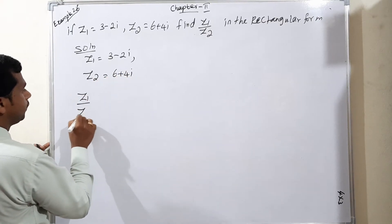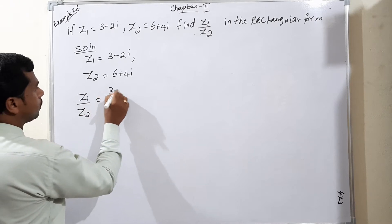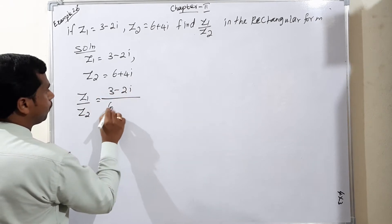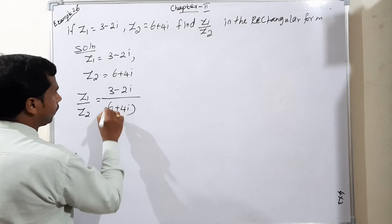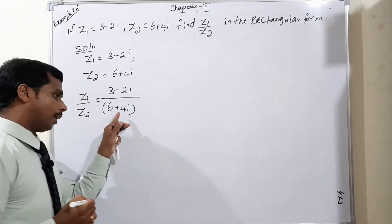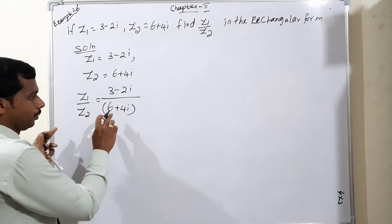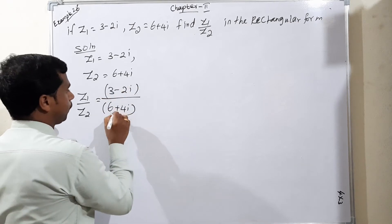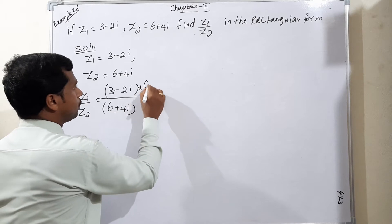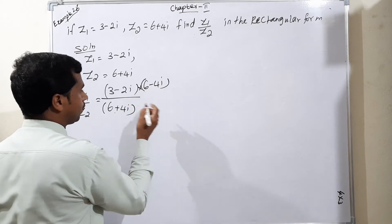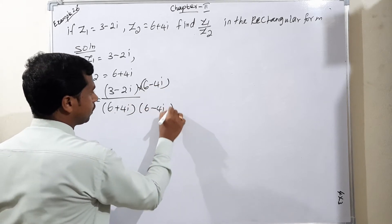So Z1 by Z2 means 3 minus 2i divided by 6 plus 4i. The conjugate means denominator only inverse, that is the imaginary term only we have to change the sign. So plus 4i means into 6 minus 4i, as well as denominator also 6 minus 4i.